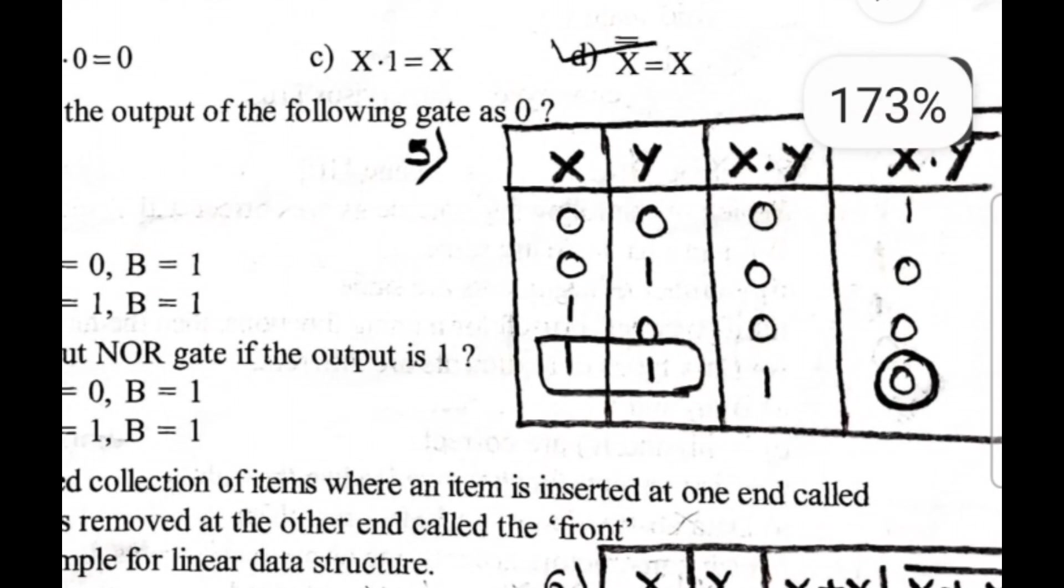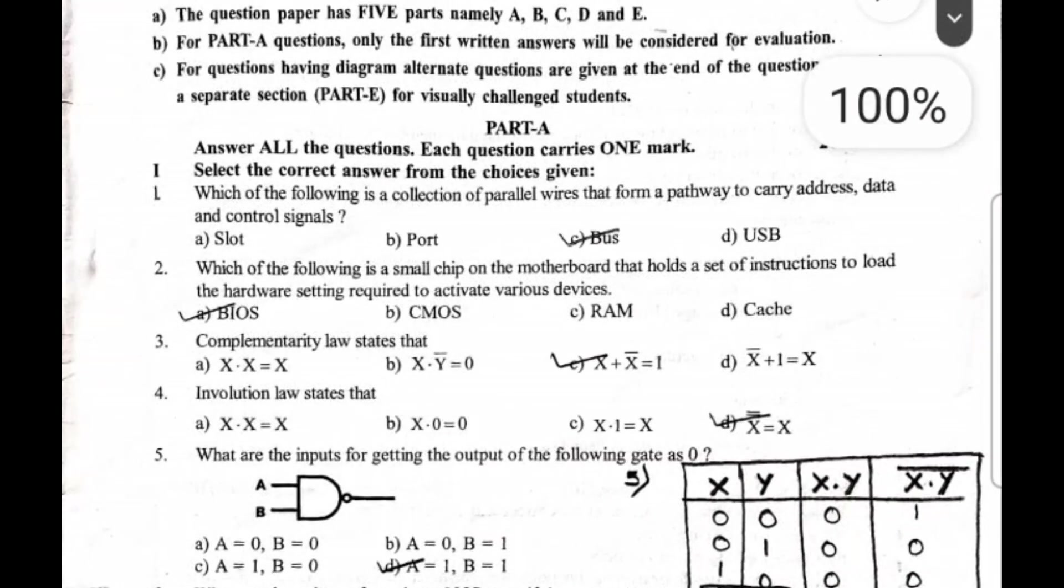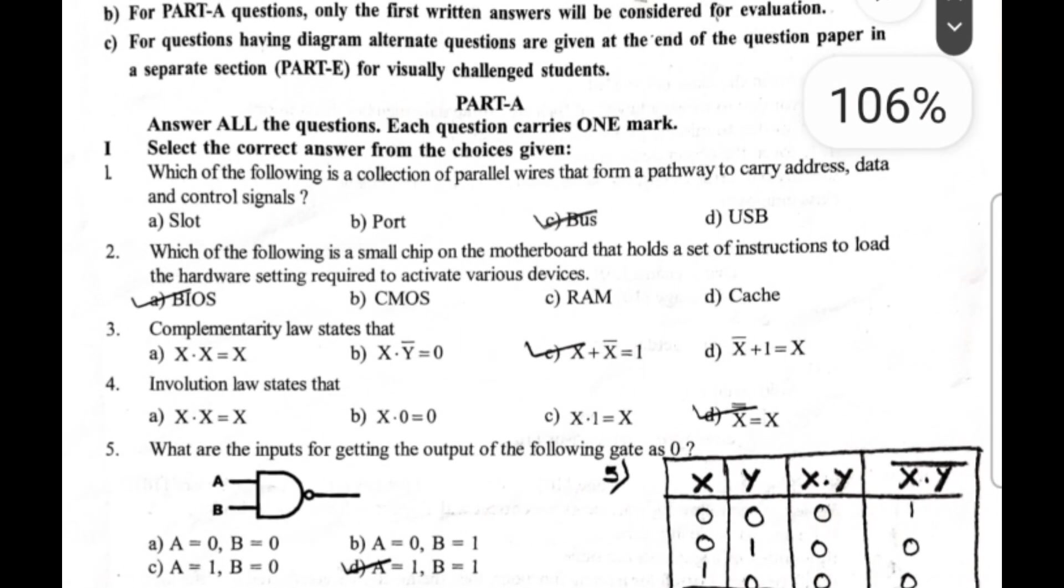With reference to the truth table, this is the NAND gate. So X column, Y column, X into Y, and NAND is the complement of AND gate. They have said what are the inputs for getting the output of the following gate as zero? You are getting output as zero, but what are the inputs here? The inputs are 1 and 1.